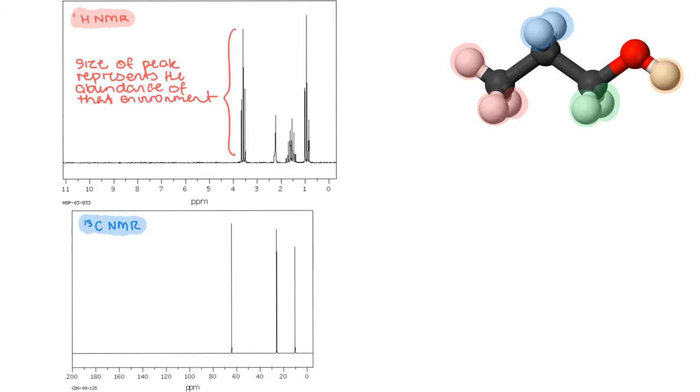The peak reflects the abundance of that environment. Looking at the different carbon environments, you can see that there are three different types, due to their electron densities. Hence, you should see three peaks.